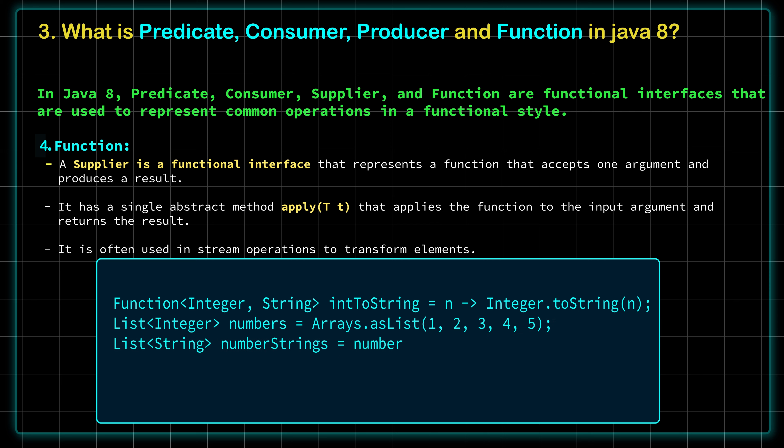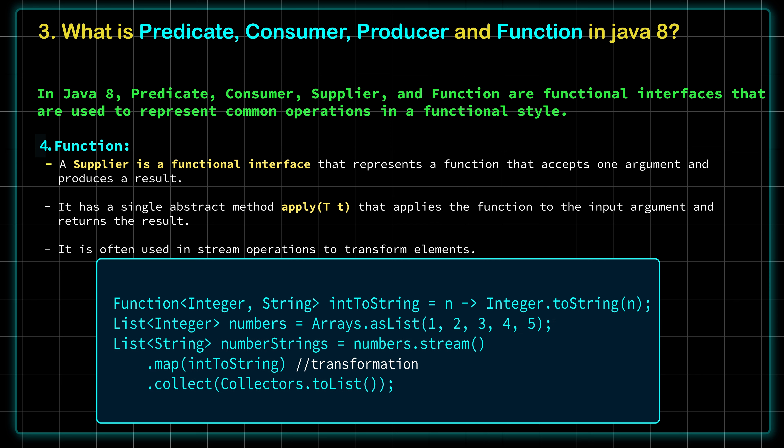Coming to the final one — Function. It is also a functional interface which represents a function that accepts one argument and produces a result. It has a single abstract method called apply() that applies the function to the input argument and returns the result. Function is often used in stream operations to transform elements. In the example, on a number stream we have applied map, which takes a Function as an argument — the function transforms the input from int to String. This question can also be asked in relation to functional interfaces.